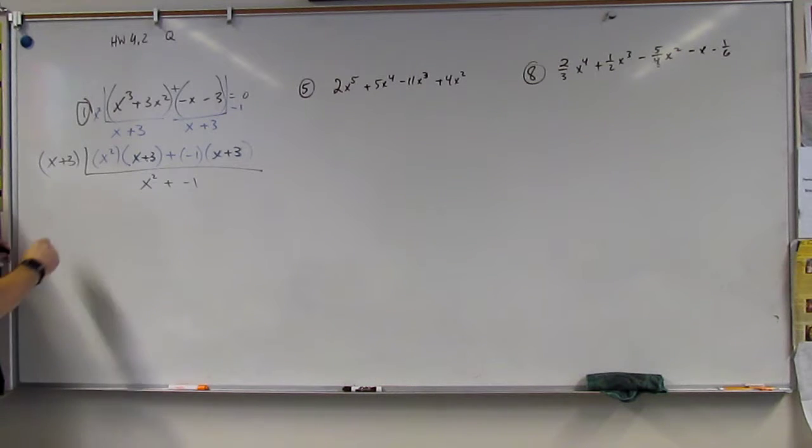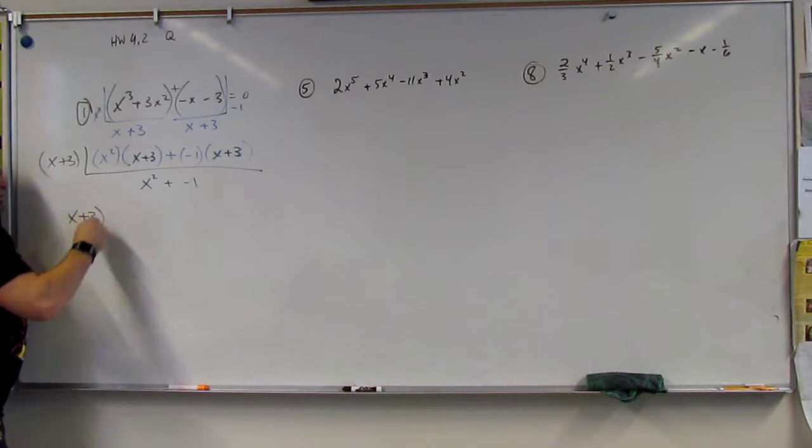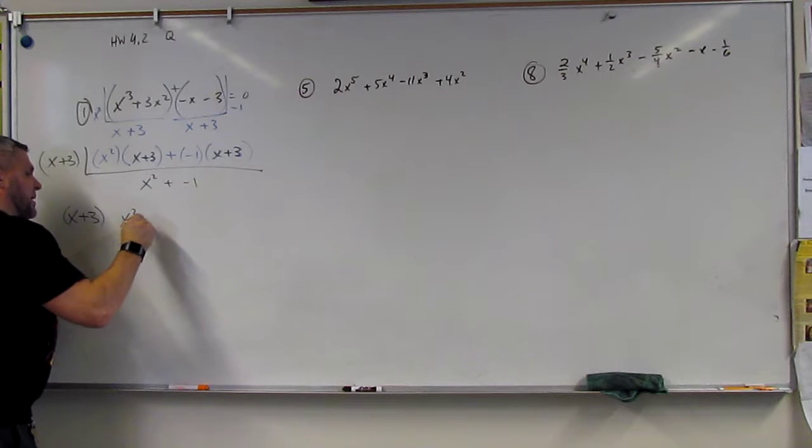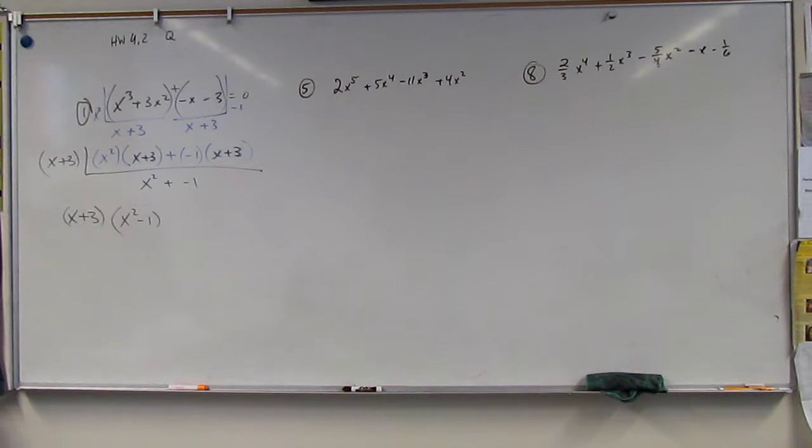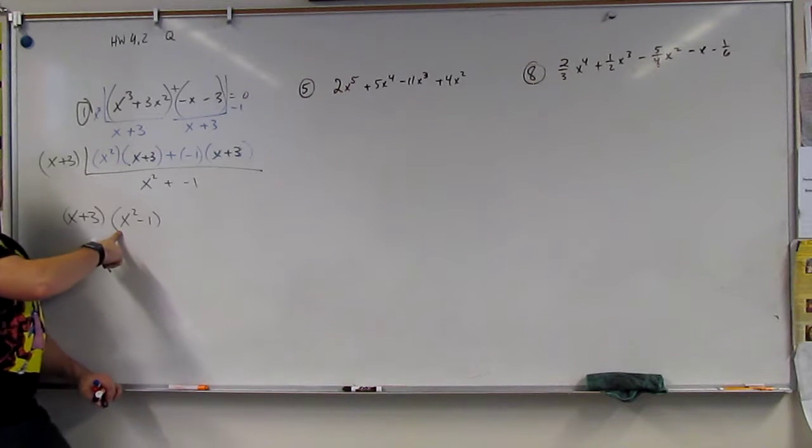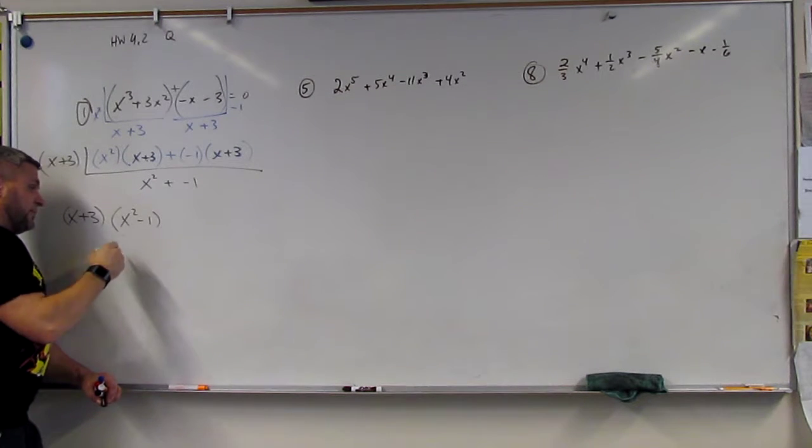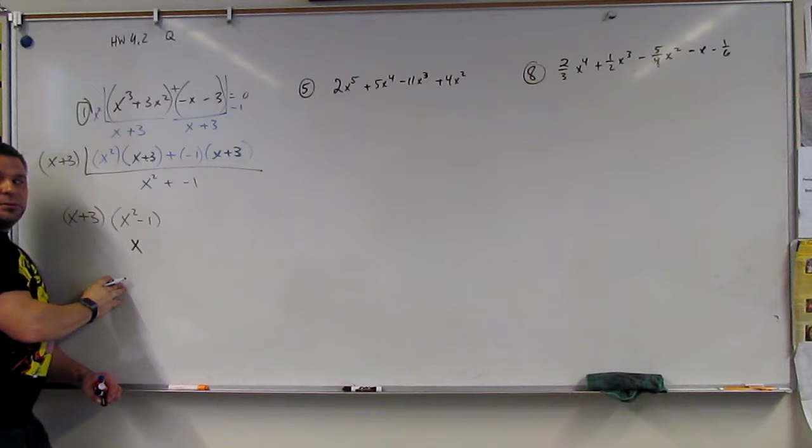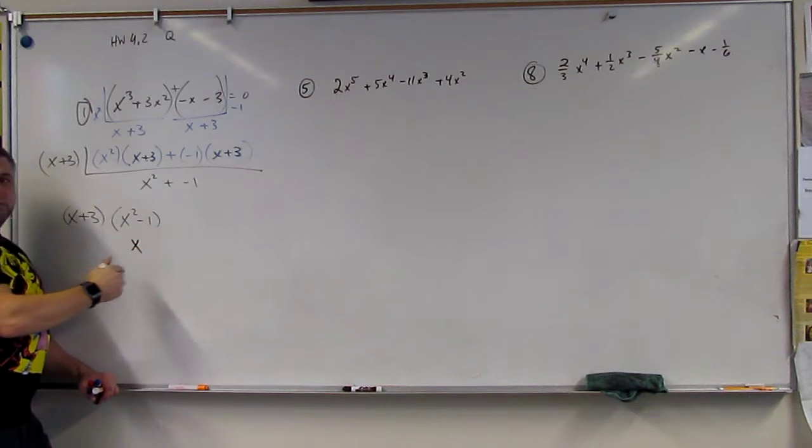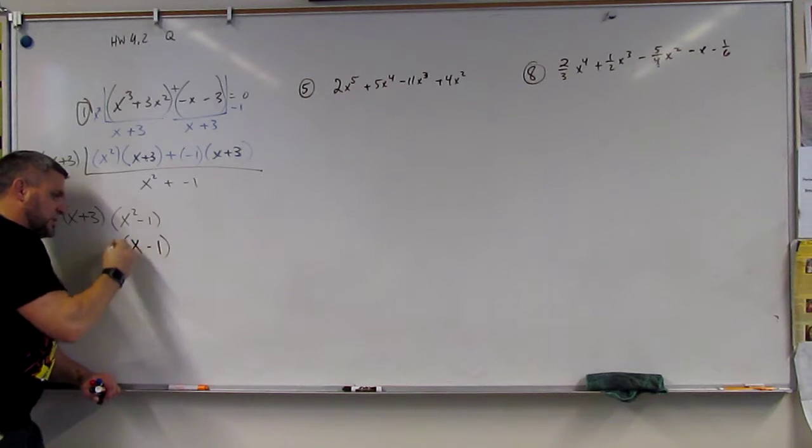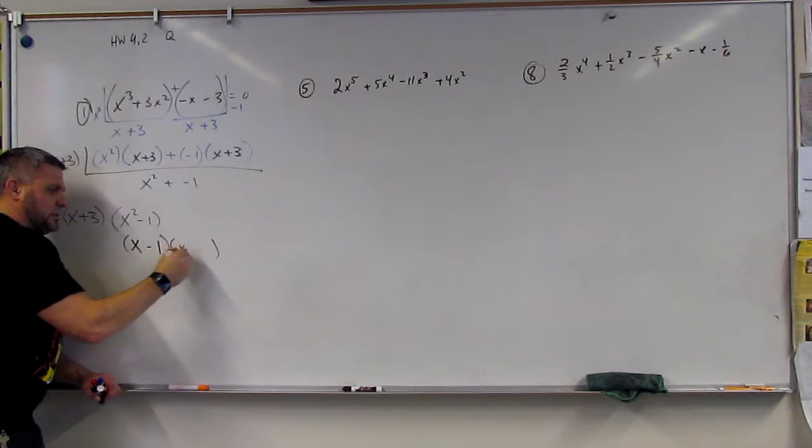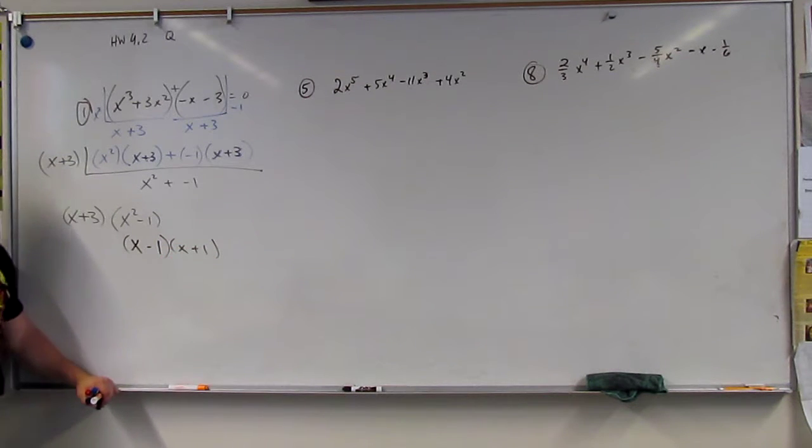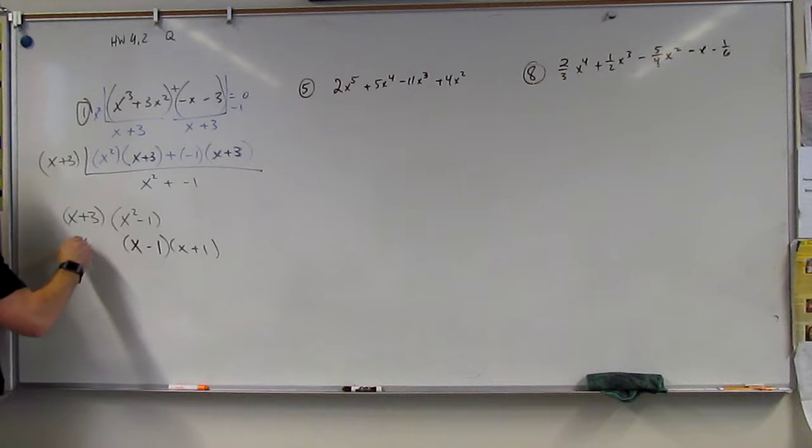So then I have X plus 3, and X squared minus 1, because a plus minus is a minus. And then if we remember, this is a difference of squares. This is X. The square root of 1 is 1. What's the conjugate? Plus 1. Yeah. Okay, so we have this.